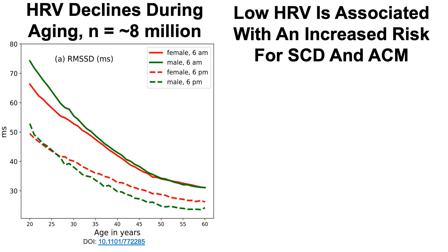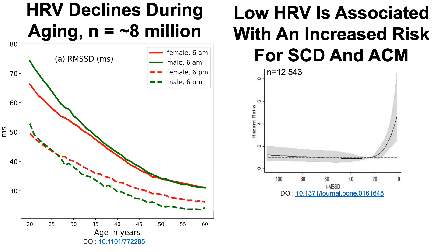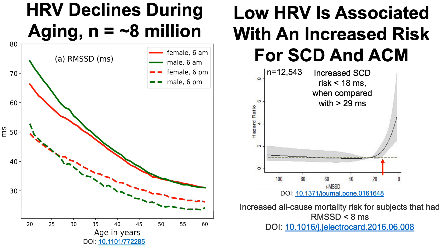Low heart rate variability is associated with increased risk for sudden cardiac death (SCD) and all-cause mortality (ACM). In a group of 12,500 people, those with RMSSD values less than 18 milliseconds had increased risk for sudden cardiac death relative to those with values above 29 milliseconds. Additionally, RMSSD values less than 8 milliseconds were associated with increased all-cause mortality risk. Very low heart rate variability is also possible with an unfit, sedentary lifestyle — not just in old age.